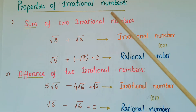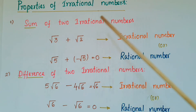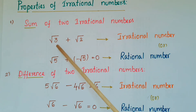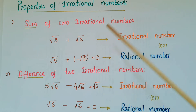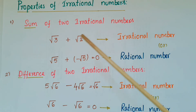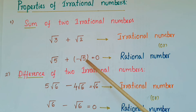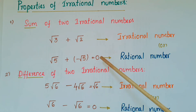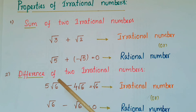These are some properties of irrational numbers. First: the sum of two irrational numbers. If you take root 3 plus root 2, you get an irrational number. But if you take root 5 and minus root 5 and add them, you get 0, which is a rational number. So the sum of two irrational numbers need not be an irrational number.